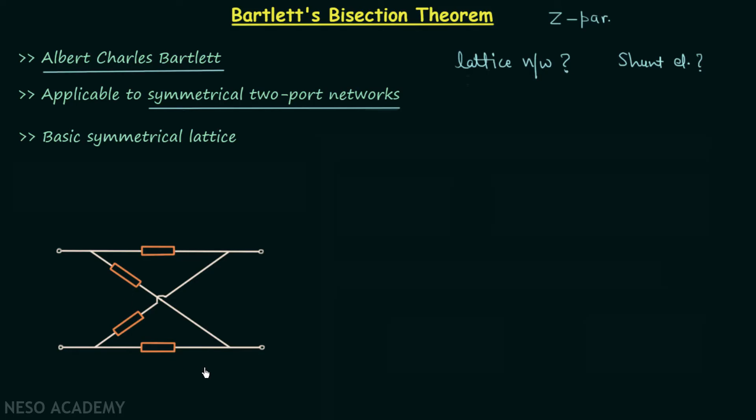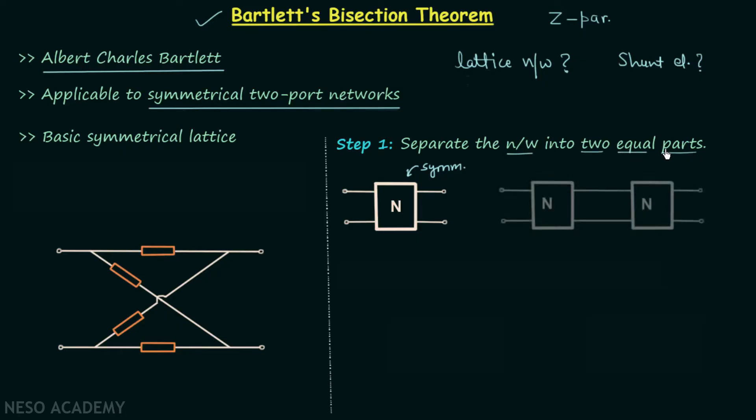Now I will explain how you can calculate the z parameters of a symmetrical two port network using Bartlett's bisection theorem. For this I have taken one two port network which is symmetrical and I will separate it into two equal parts like this.